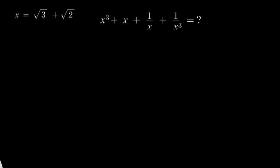Hello everyone. In this interesting question, we are given x as root 3 plus root 2. Using this, we are supposed to find out the value of this huge expression: x cubed plus x plus 1 by x plus 1 by x cubed. You can try to directly substitute this value in the expression — you will get the answer, but that will be a bit lengthy procedure. We want to go around this problem and find some shortcut techniques to solve it.